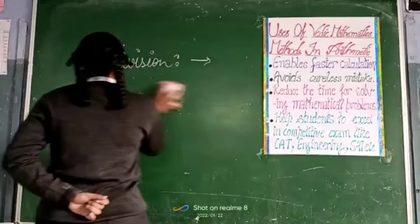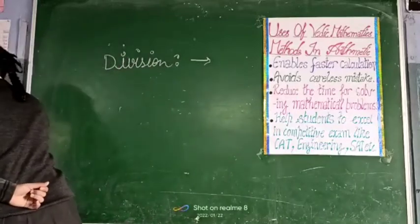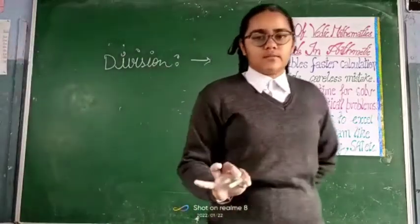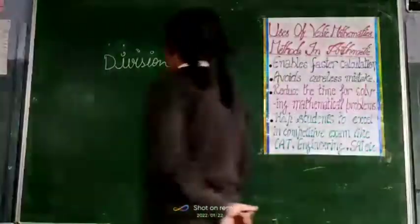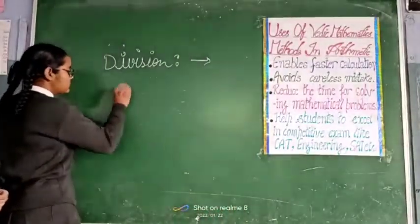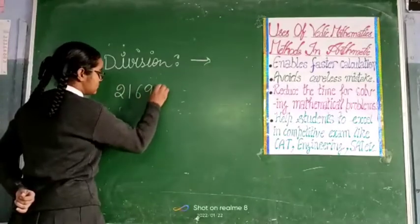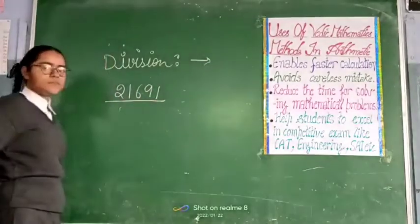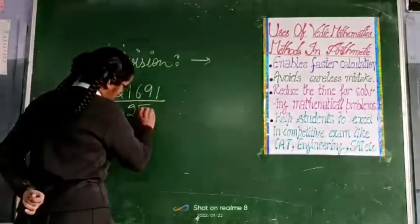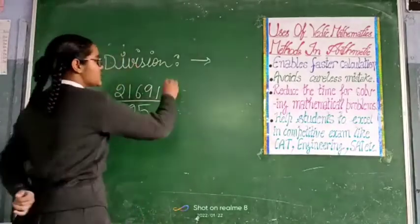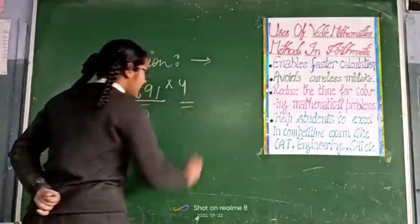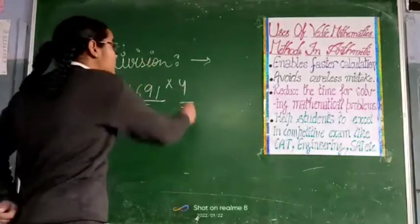Now, second type is if any number is divided by 25. If we have suppose an example. Clear? Sorry, by 25. Not multiply by 2, it is multiplied by 4. Concentrate here 4. Not 2.